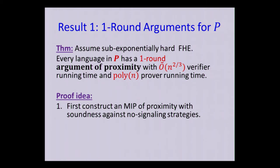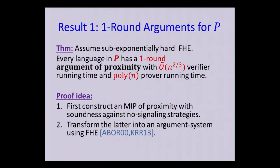Once we have this MIP of proximity, we can transform the latter using more or less tools that are already known in the classical setting, using fully homomorphic encryption. This is a heuristic that was suggested in a work by Aiello, Bhatt, Ostrovsky, and Rajagopalan in 2000, and it was shown to be secure in a work two years ago, again, with Kalai and Raz, assuming that the MIP has this strong no-signaling soundness property. Okay. So that's the first result.